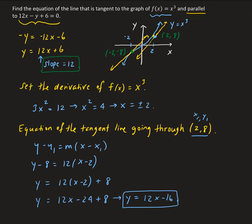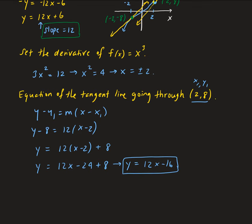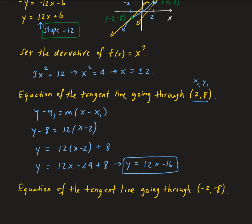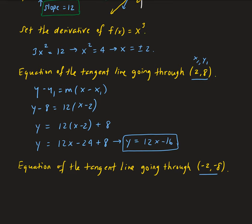Now let's find the equation of the tangent line going through the other point, negative 2, negative 8. Same idea here, but a different point. This time I'll use the slope-intercept form, just to show you that even if you use this form you'll still get the same result.